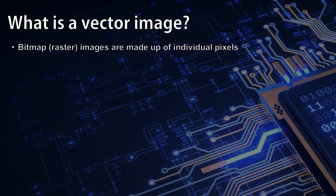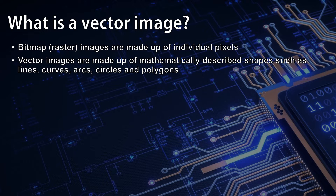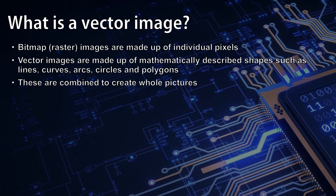Vector images are made up of mathematically described shapes, such as lines, curves, arcs, circles, and polygons. These are combined to create whole pictures.